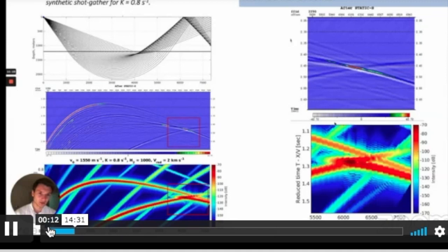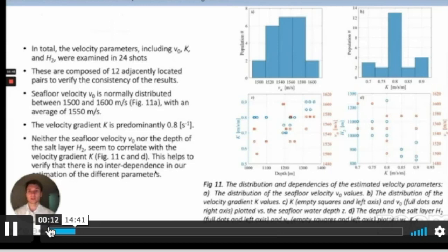We estimated 24 shots. These shots were composed of 12 adjacently located pairs. It's one shot next to another, about 100 meters from another, to see if there is consistency of the results. And seafloor velocity is normally distributed from 1500 to 1600 meters per second. Average velocity is 1550 meters per second. And velocity gradient is predominantly 0.8. Also, neither seafloor velocity nor depth of this salt layer H2 seem to correlate with the velocity gradient. And this is good because it helps us to verify that there is no interdependence in our estimation of different parameters.